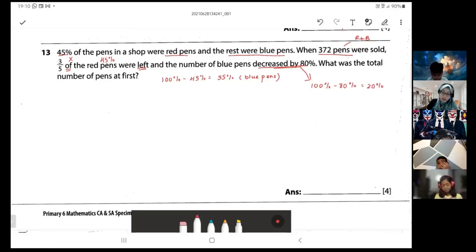What was the total number of pens at first? At first, total red plus blue. Okay, so we can do this portion here first. Three over five times 45 percent equals to 27 percent. This is what was left for my red pens.